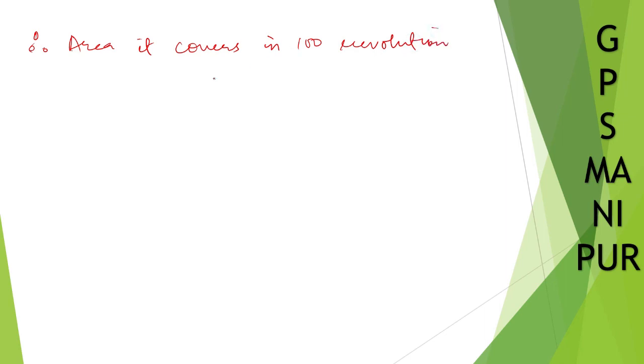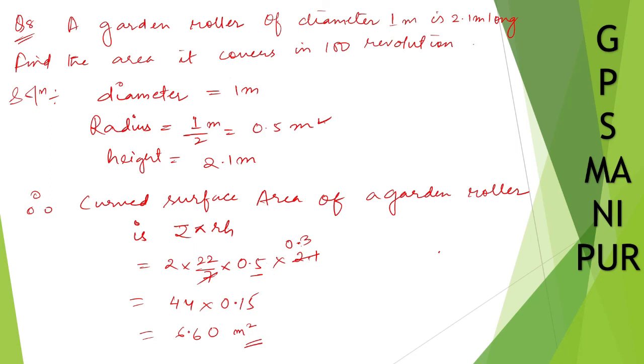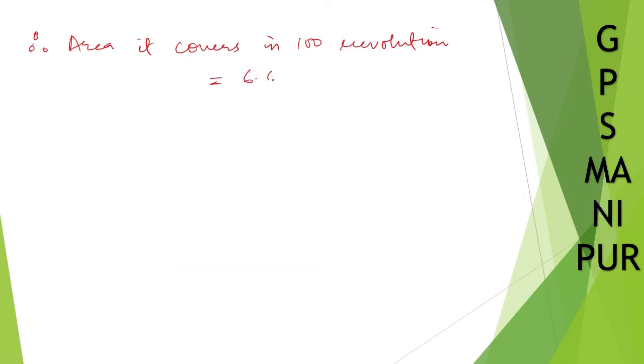is equal to the curved surface area, 6.60, multiplied by 100, which will be equal to 660 meter square. This is the answer. I hope the answer is correct. That's all, thank you so much. We will meet in the next video.